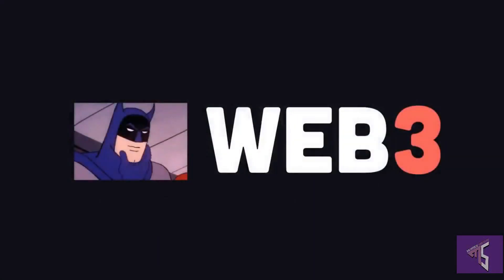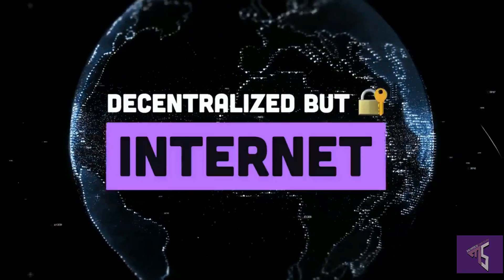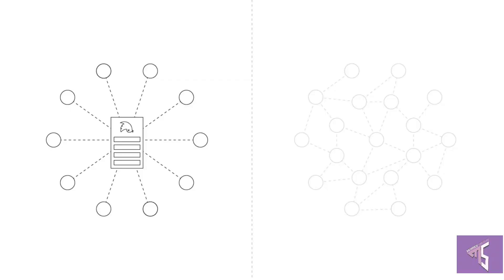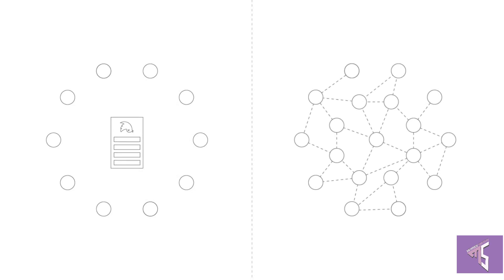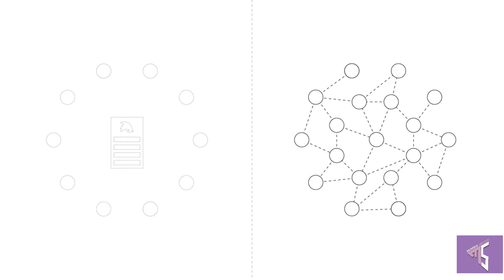In a nutshell, Web3 is the third generation of the internet, or Web3 is just a fancy name for decentralized internet. Decentralized means a system which is not governed or controlled by any central authority.